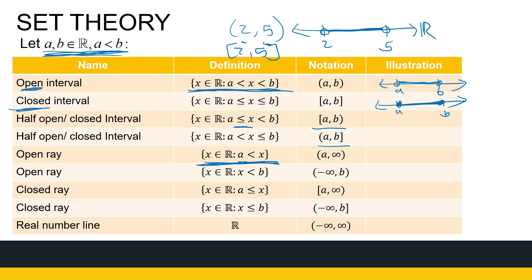If A is a given real number, the interval (A, ∞) represents all numbers X where A is less than X — everything from A to infinity. A is not included because it has a round bracket, and it carries on forever. That's why infinity always has a round bracket — because I can't stop there.